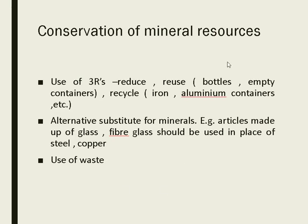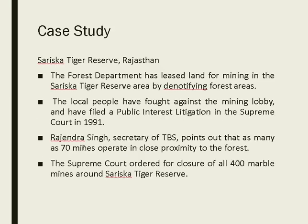To conserve mineral resources, since they are non-renewable, use the 3Rs: reduce, reuse, and recycle. Use alternative substitutes like fiberglass instead of steel and copper, and reuse generated waste. Case study: Sariska Tiger Reserve in Rajasthan — the forest department leased land for mining. Local people filed a Public Interest Litigation in the Supreme Court. Rajendra Singh of Tarun Bharat Sangh pointed out that 70 mines were operating near the forest. The Supreme Court ordered closure of all 400 marble mines, preserving the reserve.